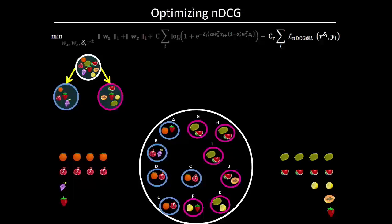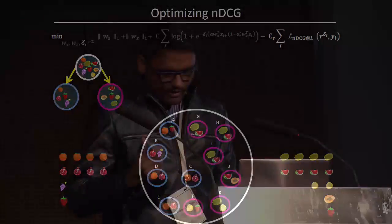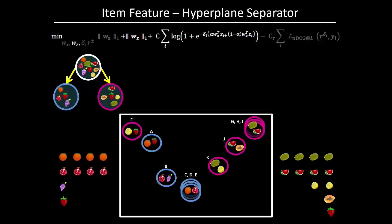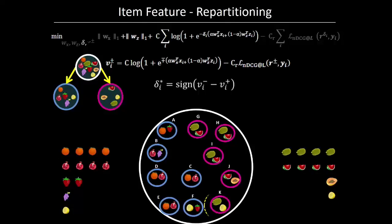Same as FastXML, we also use an alternating minimization approach to optimize LFT XML. Initially, at each node we randomly assign users to left and right partitions. Then we find a ranking for each partition by fixing other parameters. Next, we re-partition the users in the left and right nodes by fixing all other parameters. Then we learn the item hyperplane and the user hyperplane.